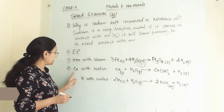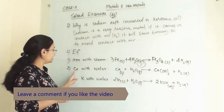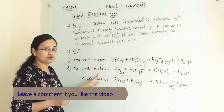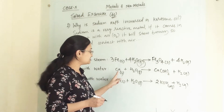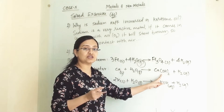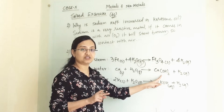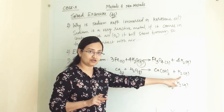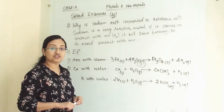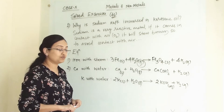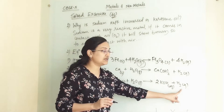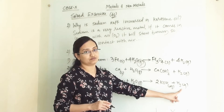Also, we have to write the equation when calcium reacts with water: calcium reacts with water to give calcium hydroxide and hydrogen gas. Similarly, when potassium reacts with water, we get potassium hydroxide and hydrogen gas.